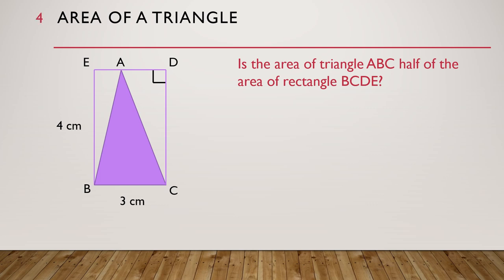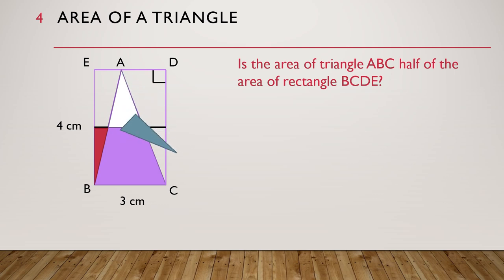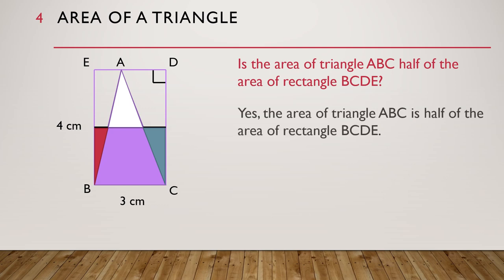We will first divide rectangle BCDE into two equal parts in the middle. Then for the top part of triangle ABC, we will split it into two smaller triangles. Let's watch this animation to show what happens to these two smaller triangles. The two smaller triangles can be moved so that they fit into the lower half of rectangle BCDE. So the answer is yes — the area of triangle ABC is half of the area of rectangle BCDE.